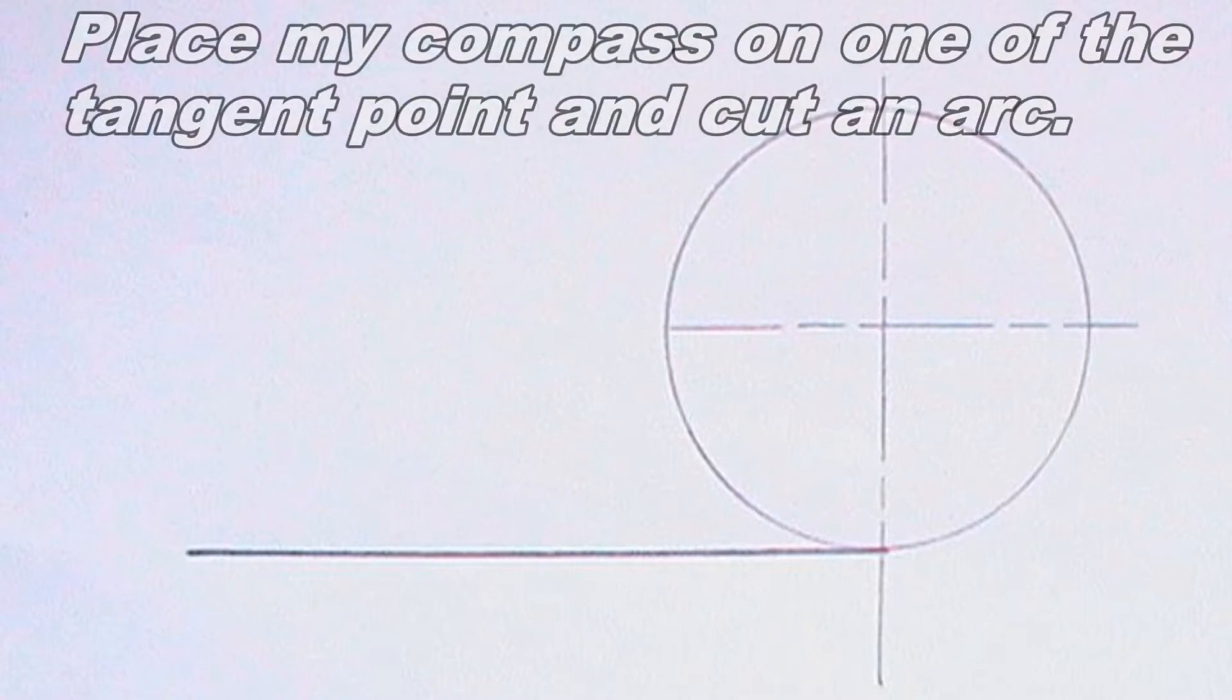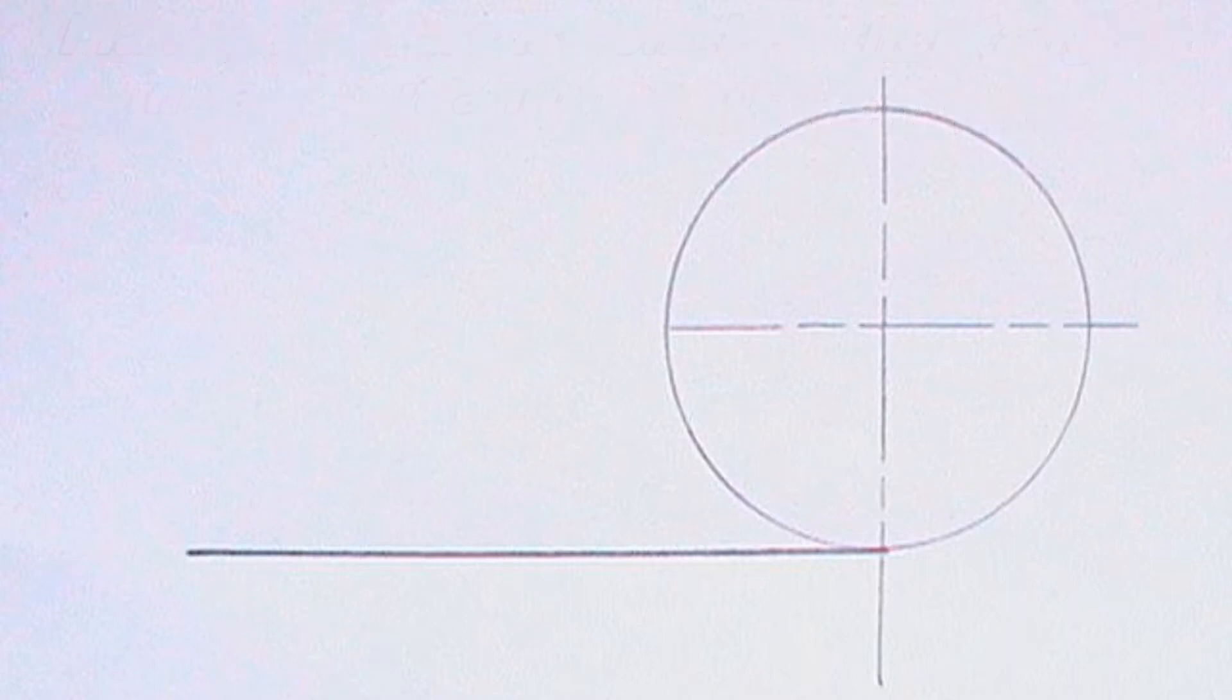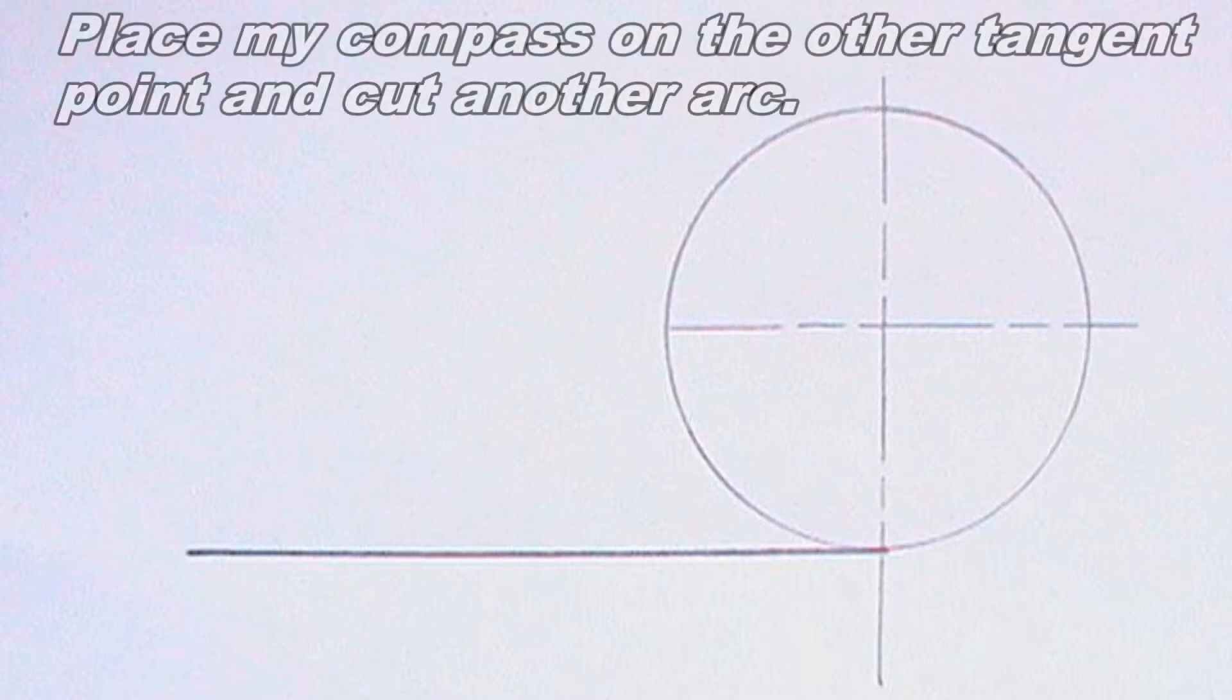The next thing I will do is to place my compass on one of the tangent points, then I will cut an arc. I will also place my compass on the other tangent point and cut another arc. The radius of the arcs should be the radius of the tangential arc I'm about to produce.